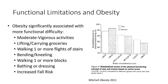Levels of function in obese individuals decrease as waist circumference increases. Looking at a plot describing that, as we move up for waist circumference, we start seeing lower levels of function — men shown in white, women in dotted lines. As waist circumference goes up, function decreases.